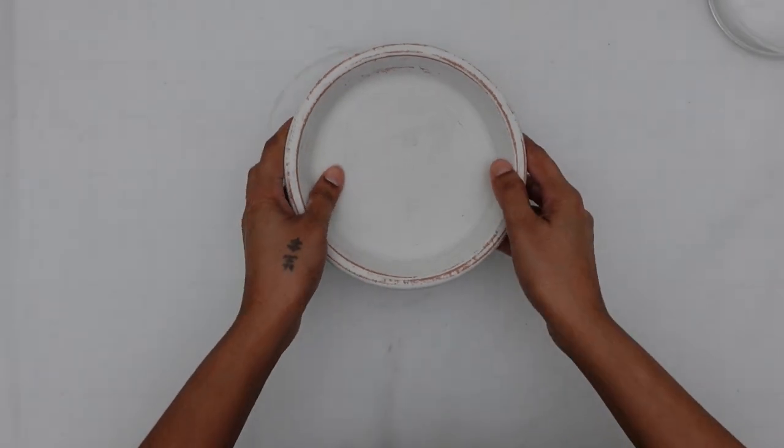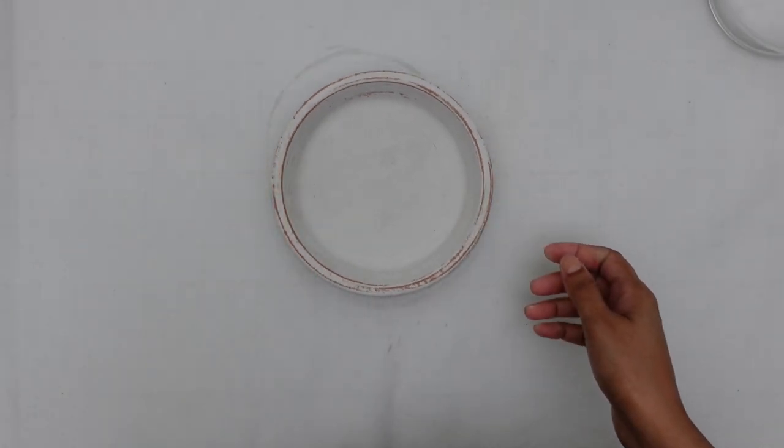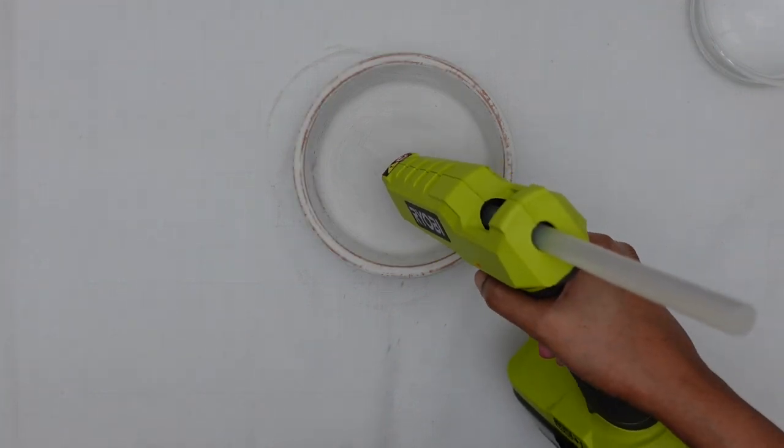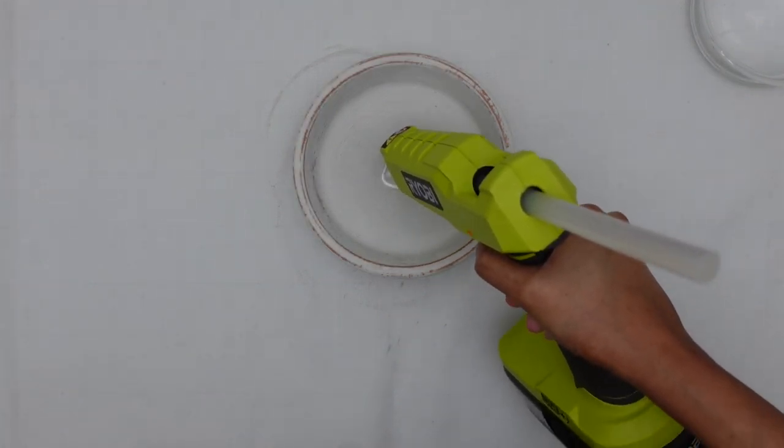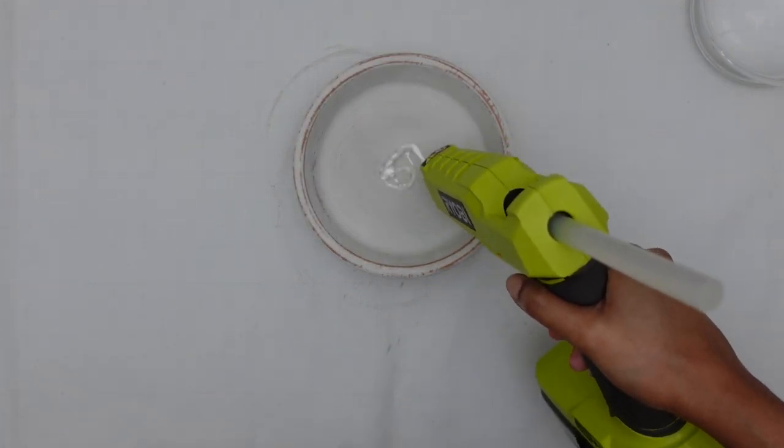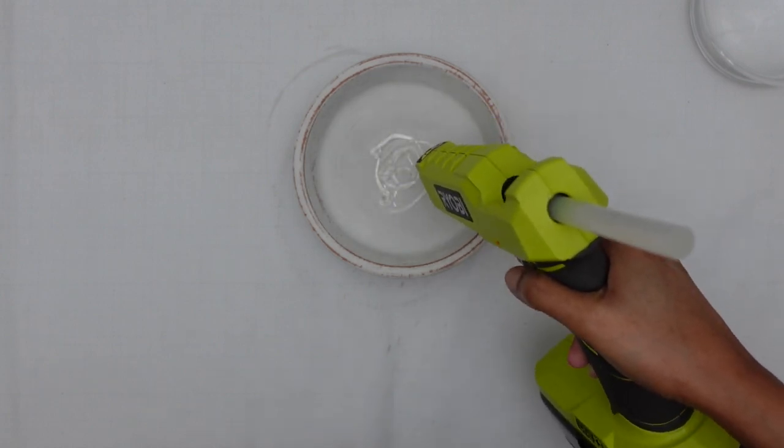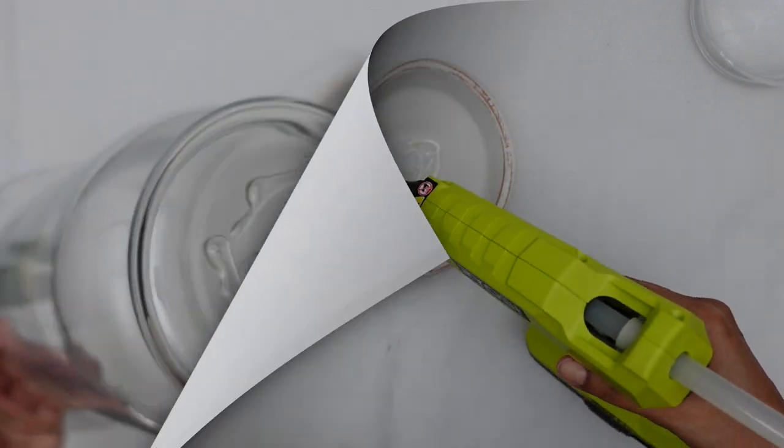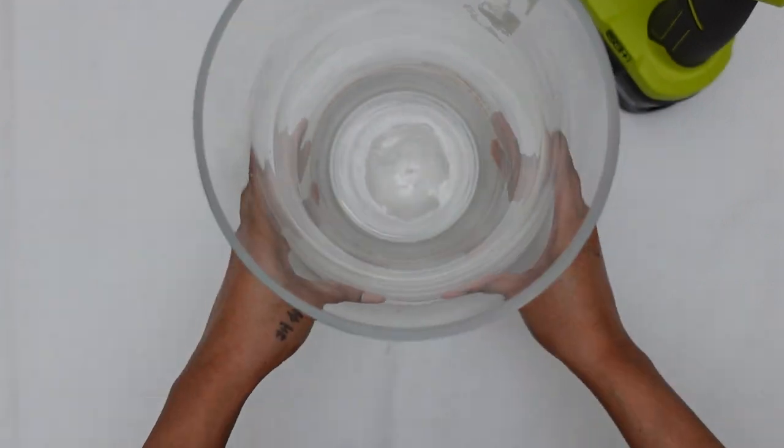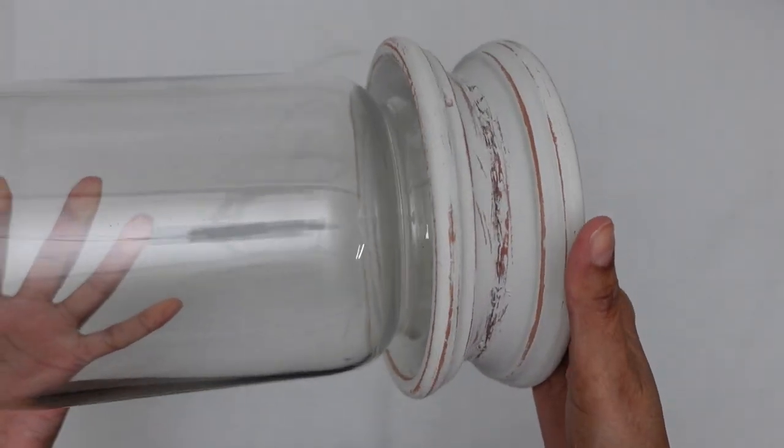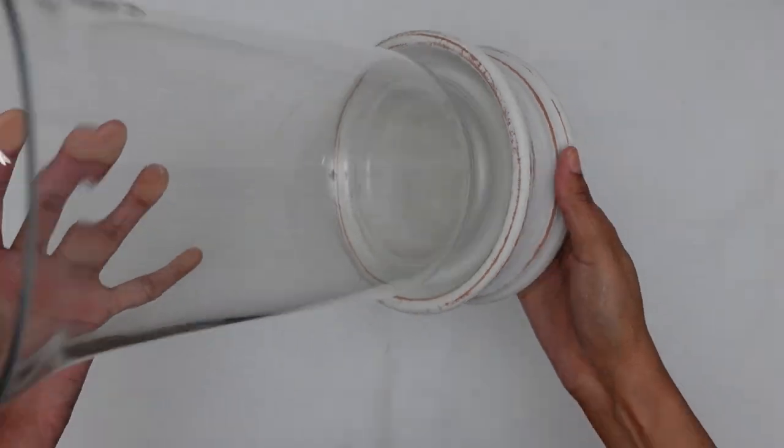Now it's all ready to be put together. I used my glue gun and applied some glue onto the base and applied more glue onto the base of the hurricane. Afterwards, place the hurricane to the center of the base and stick it together.